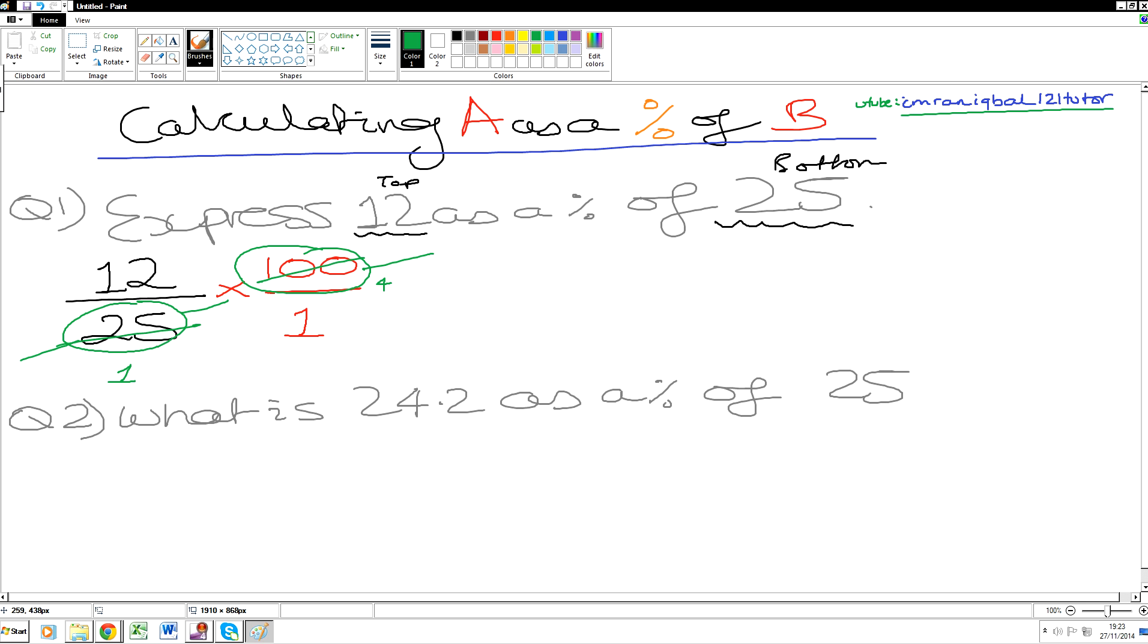Now can we cancel this vertically? 12 and 1, can we cancel 12 and 1? No, because 1 is already simple. Can we cancel 4 and 1 vertically? No, because 1 is already as simple as it will get.